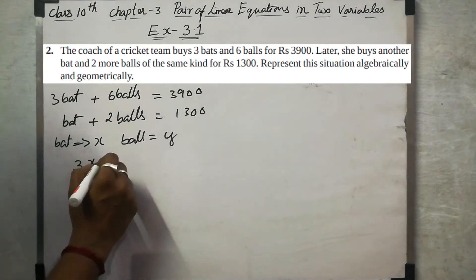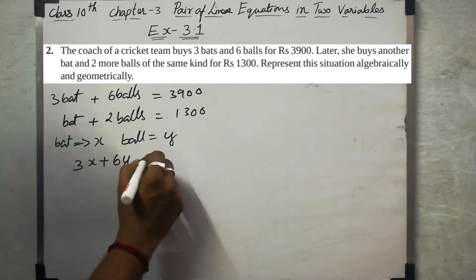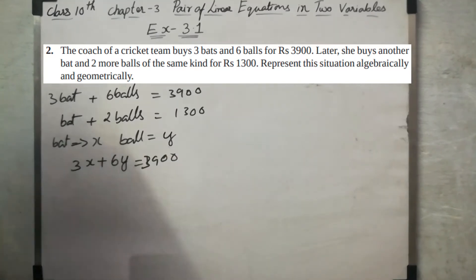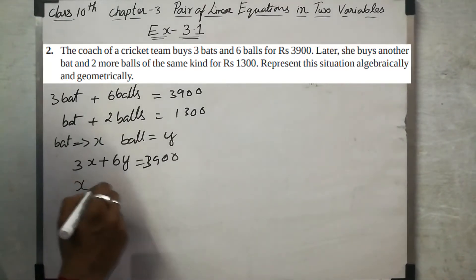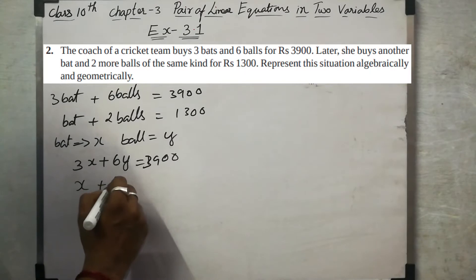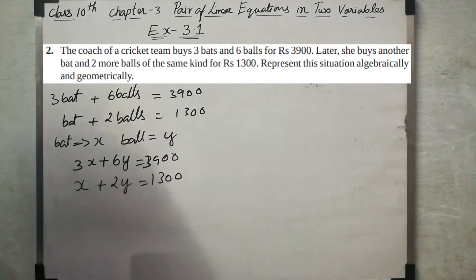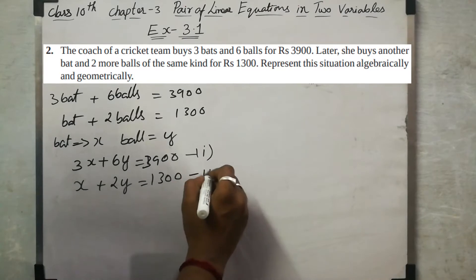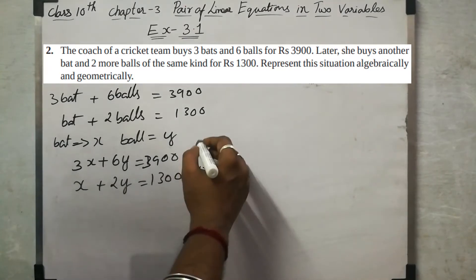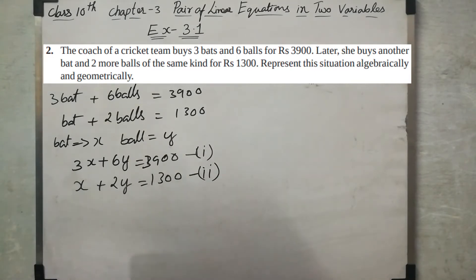So, three x plus six y equal to 3,900, and x plus two y equal to 1,300. This is the first equation and this is the second equation. This is the graphical representation — we can do a graphical representation check.